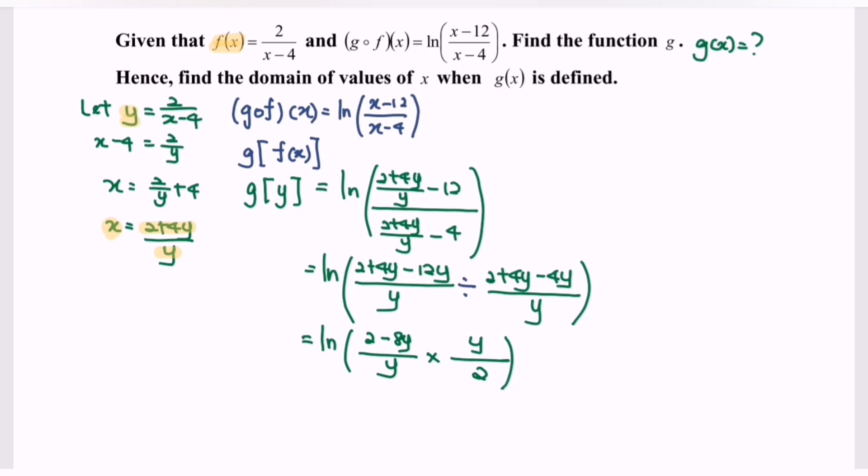Finally we have g(y) equals ln of—as we can see, we have common terms and we can simplify. Then we have (2 minus 8y) over 2. Simplify the situation.